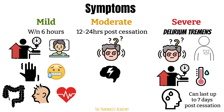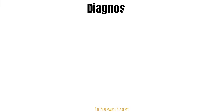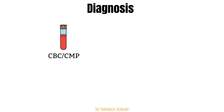Recognizing the patient's presentation and obtaining a thorough history is necessary for correct diagnosis. Laboratory studies, including complete blood counts and comprehensive metabolic panels, may be drawn but will likely be non-diagnostic. Many chronic alcoholics will have baseline ketoacidosis due to their poor nutritional status, and labs may show acidemia. Once the diagnosis is made, we also need to know the level of severity of the symptoms, since this impacts the treatment approach.